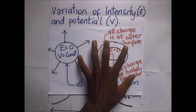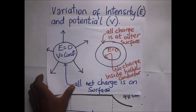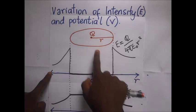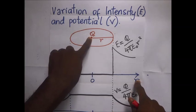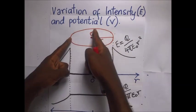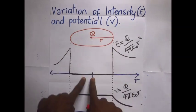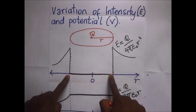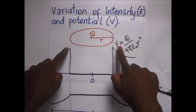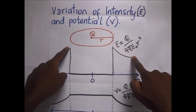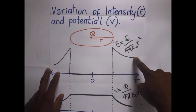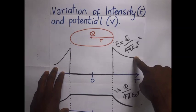If we look at the variation of the intensity E and the potential V, this is how our graphs will look like. This axis represents the distance r from the center of the conductor and here this is the intensity. Within the solid conductor, the intensity will be zero. Then moving outside the conductor, our value of E will vary. The intensity will be inversely proportional to the square of the distance from the center.